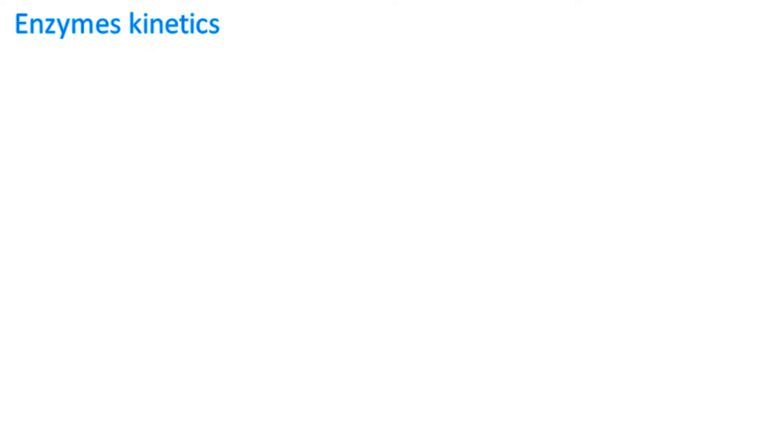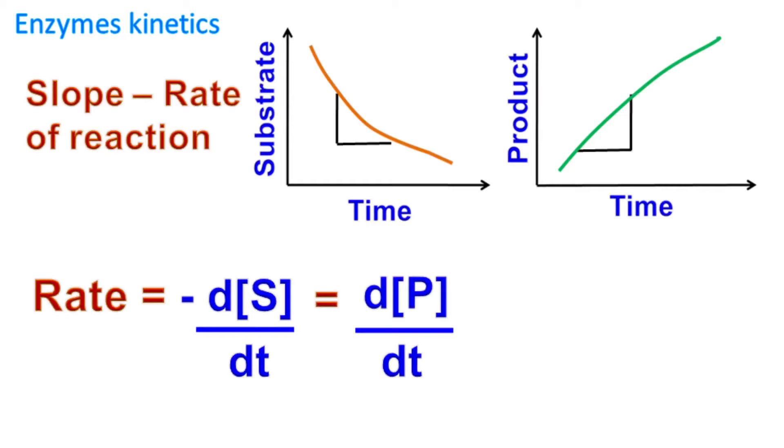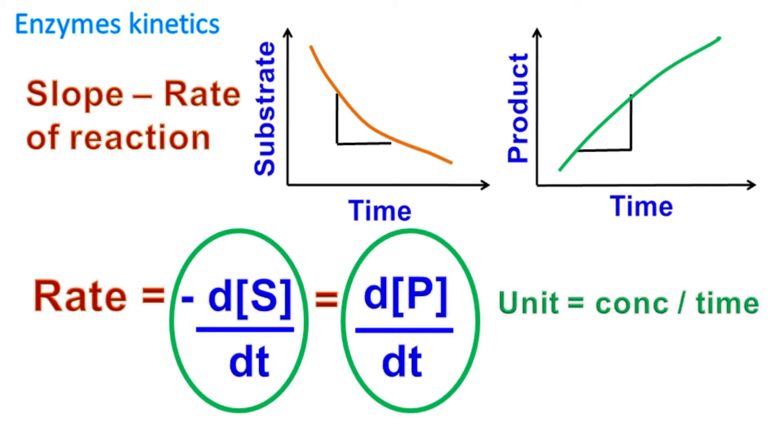If we take the slope of the graph, then what we get is the rate of reaction. The rate of reaction is the change in concentration of substrate or product per unit time. As the substrate concentration is decreasing, we use negative sign while in case of products, we use positive sign. The unit of rate of reaction will be concentration per unit time.